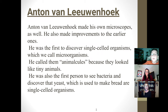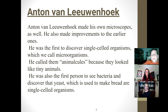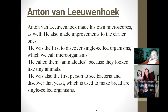A few years later, Anton van Leeuwenhoek came around and made a better microscope. He saw even smaller things than Robert Hooke saw — things we call microorganisms. The first thing he actually looked at was bacteria and yeast. He called them animalcules because they looked like little tiny animals moving around. To remember Leeuwenhoek, we give it a little twist to help us remember the bacteria like yeast — 'Anton van Leeuwenhoek!'